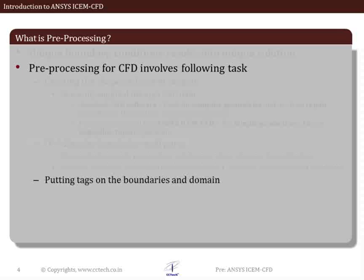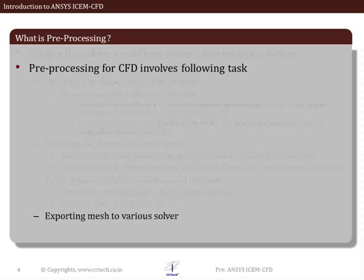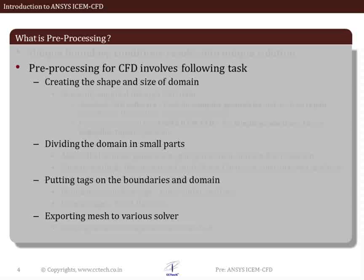Once the correct grid is generated, the next activity is putting boundary tags as well as domain tags. Boundary tagging involves labeling the surfaces of the domain with labels like inlet, outlet, or wall. Domain tagging involves labeling the volumes as solid or fluid. All this information is then exported in the correct file format understood by the CFD solver. To summarize, the overall preprocessing activity involves geometry modeling, grid generation, boundary tagging, and mesh export.